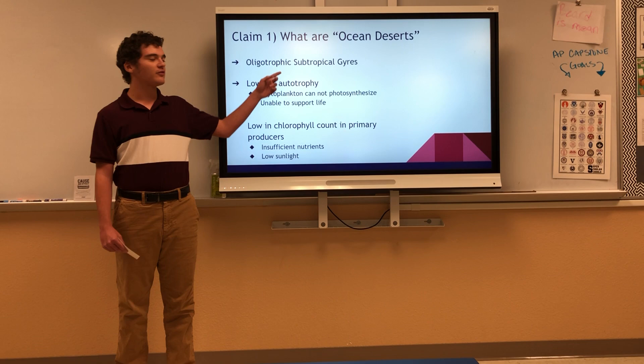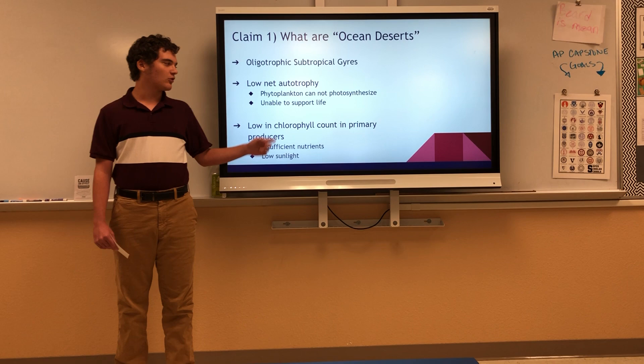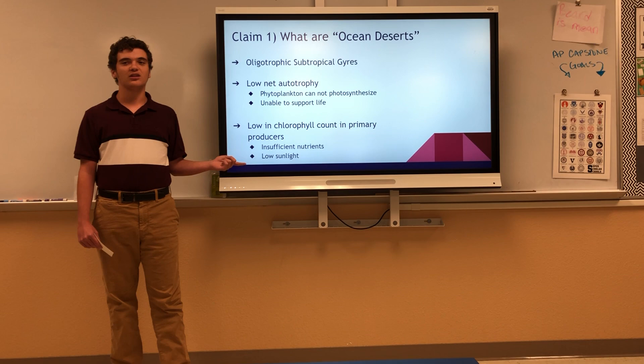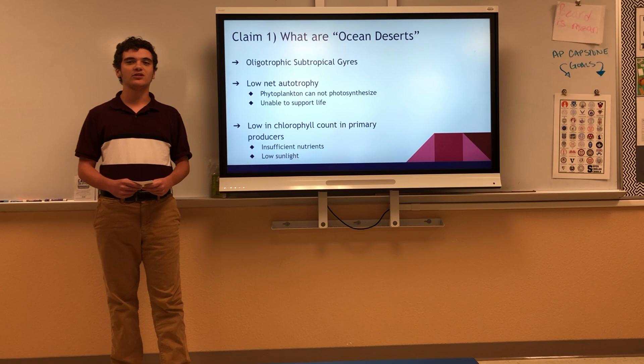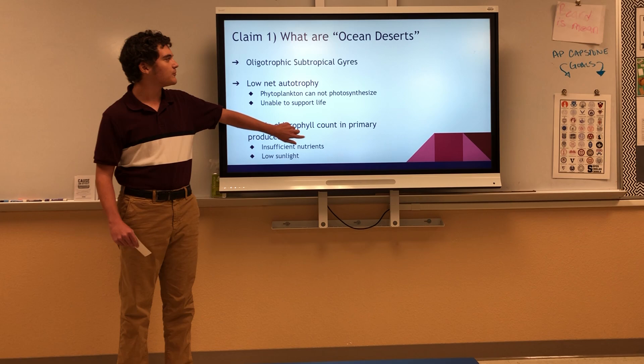For the first claim: what are ocean deserts? Ocean deserts are oligotrophic subtropical gyres. This means they're low in net autotrophy, and phytoplankton cannot photosynthesize and are unable to support life. They're also low in chlorophyll count and primary producers, meaning they have insufficient nutrients and low sunlight. So the phytoplankton, which is a primary producer for these oceans, cannot establish enough nutrients for other animals to survive in these areas.